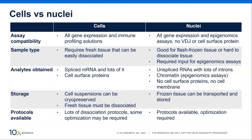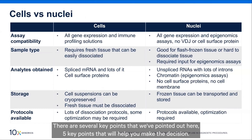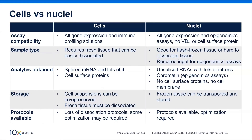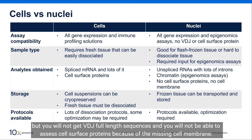To put into perspective where cells versus nuclei differ — there are five key points to help you make the decision. There are advantages of working with nuclei: you can go from fresh frozen tissue or hard-to-dissociate tissue, but you won't get VDJ full-length sequences, and you won't be able to assess cell surface proteins because of the missing cell membrane.